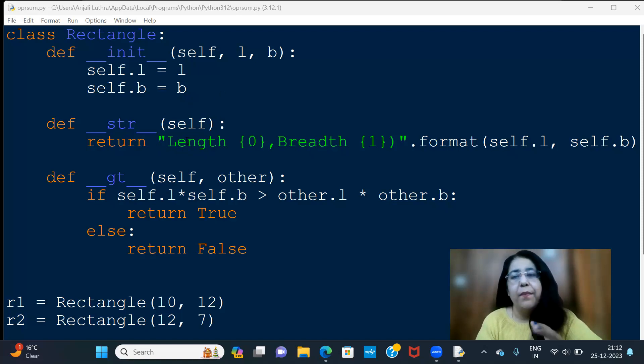So your object here is initialized. This applies L and B, that is length and breadth. And like this, when we print the object, we are doing it in the string, so length and breadth is being printed.